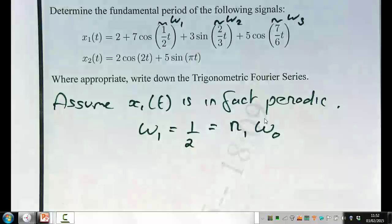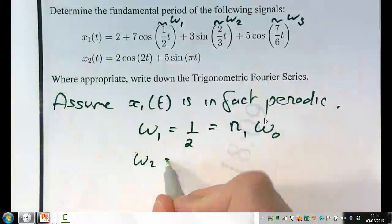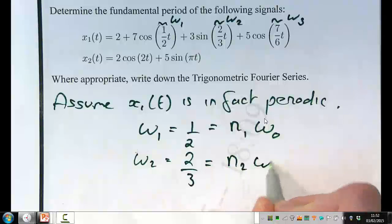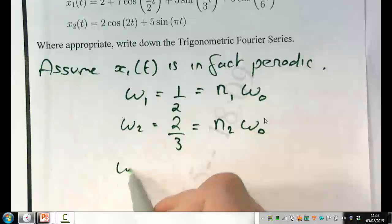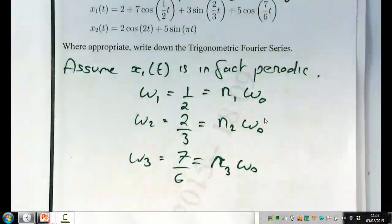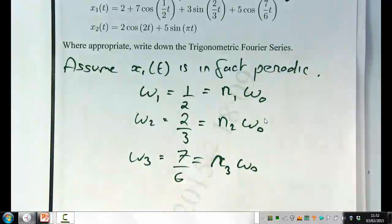And similarly, omega 2, which equals two thirds, should equal a different multiple of omega 0, and so on. Okay, so n1, n2 and n3 must be integers.